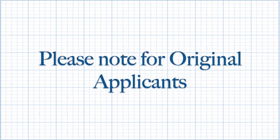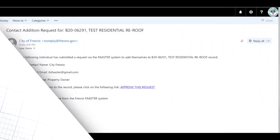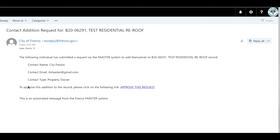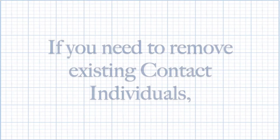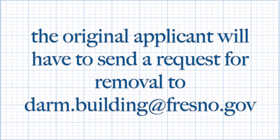Please note for original applicants. If you are the original applicant who created the application for the building record, you will receive an email similar to this — a contact addition request for project record numbers that start with a B number or an AD number. Once you receive this email, please make sure to click on approve this request to approve the contact request. If you need to remove existing contact individuals, the original applicant will have to send a request for removal to darm.building@fresno.gov.